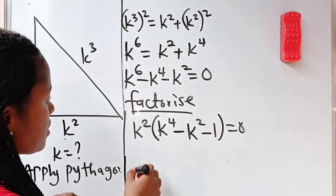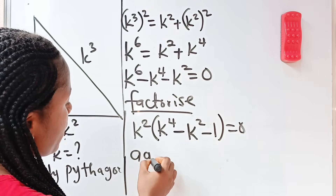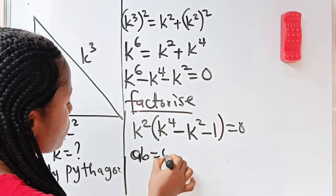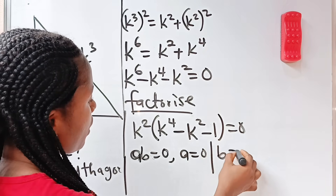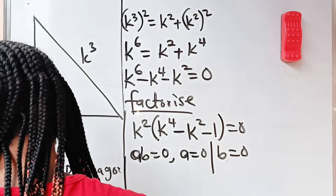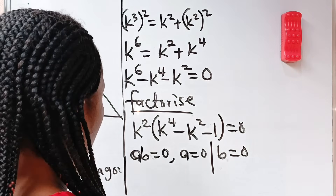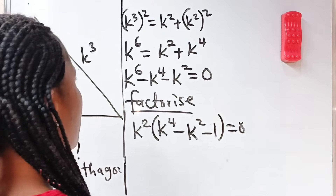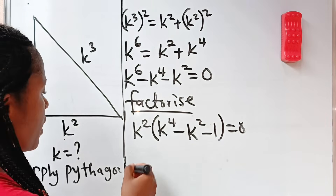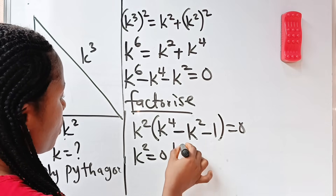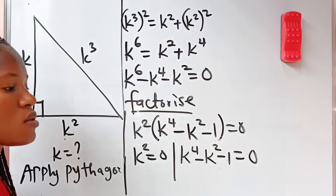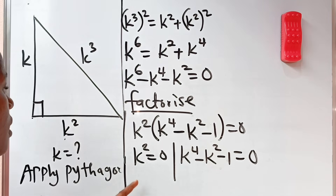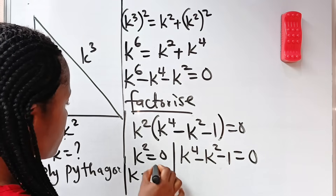Now remember that if A multiplied by B is equal to 0, it simply means that either A is equal to 0 or B is equal to 0. Therefore, we can write that K squared is equal to 0, or K to the power of 4 minus K squared minus 1 is equal to 0. From the first case, taking the square root of both sides, K is equal to 0.